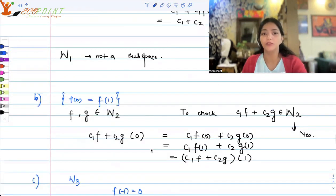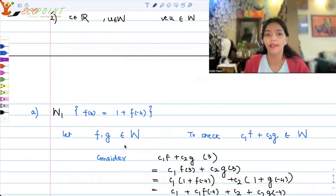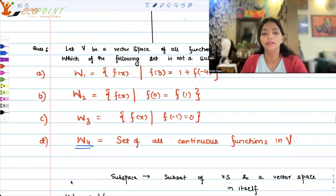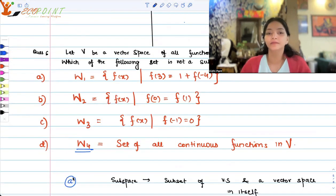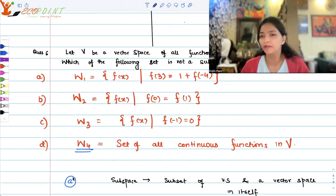The only one which is not a subspace of V is option a and hence option a should be the correct option. W₁, which is the set of all f(x) such that f(3) equals a fixed value 1 plus f(-4). You would observe that mostly these kind of sets where you have something particular getting added like this might not turn out to be a subspace. But you must check. It's a very basic definition that you have to check: closure under addition and scalar multiplication. Once checked, you can be sure of your correct answer. A should be the answer here.